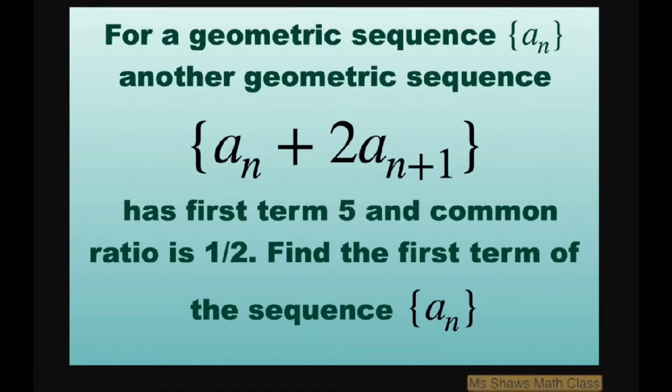Hi everyone. For a geometric sequence a sub n, another geometric sequence a sub n plus 2a sub n plus 1 has first term 5 and common ratio 1/2. So we're going to find the first term of this sequence. Let's get started.